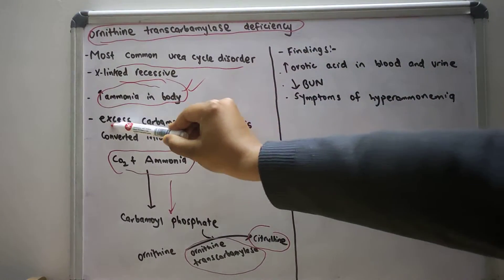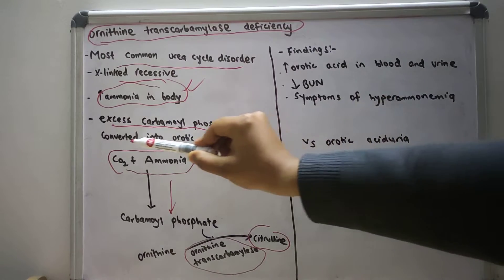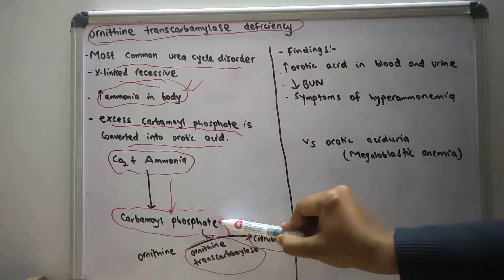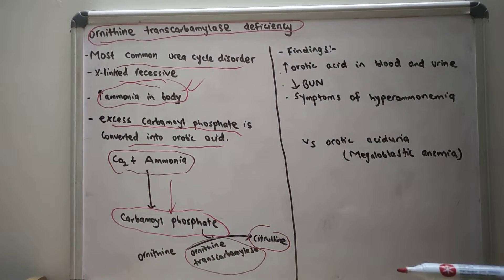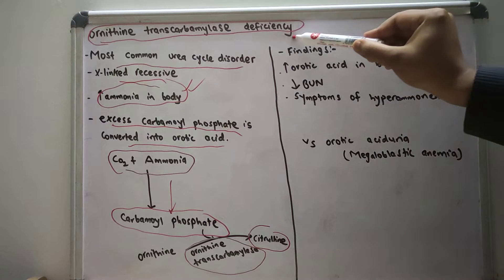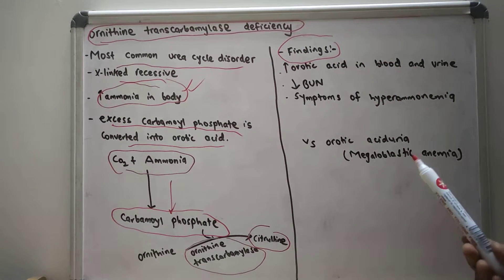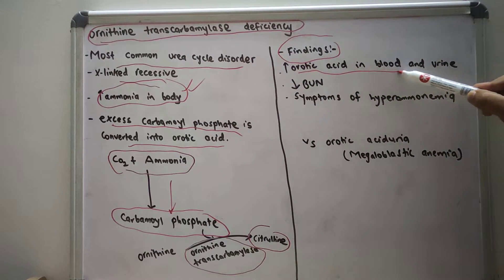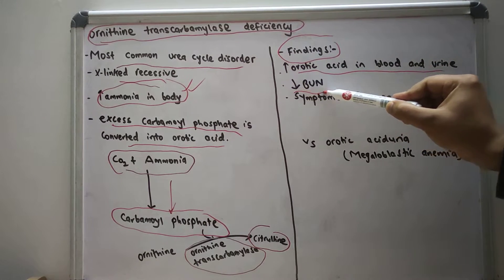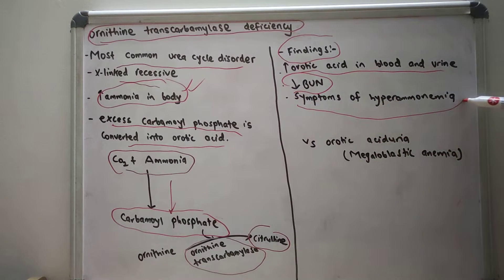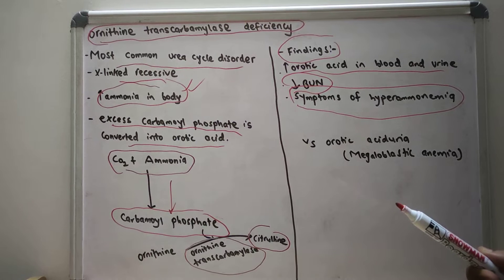The excessive carbamyl phosphate is converted into orotic acid. If there is no ornithine transcarbamylase, there will be no conversion of carbamyl phosphate. The findings of ornithine transcarbamylase deficiency include increased orotic acid in blood and urine, decreased blood urea nitrogen, and all the symptoms of hyperammonemia.